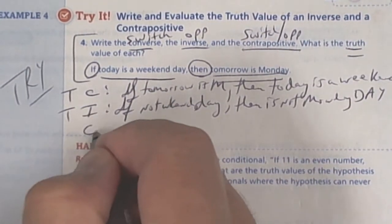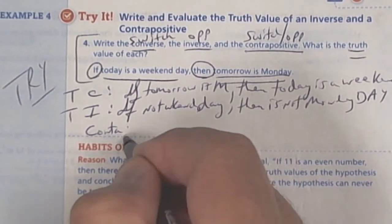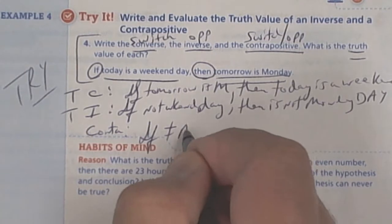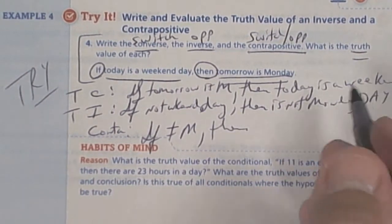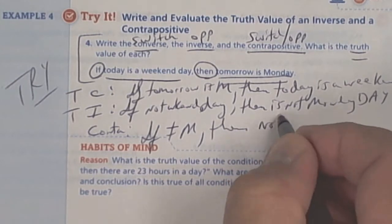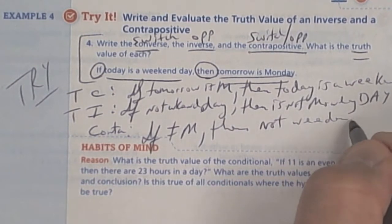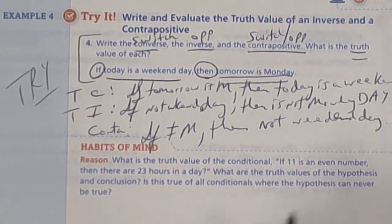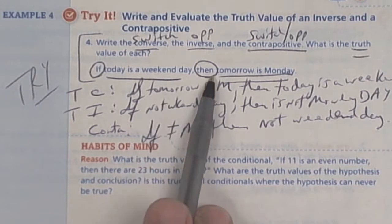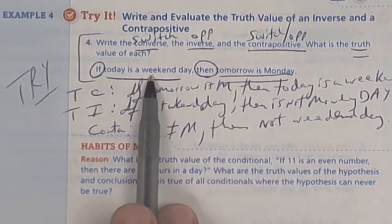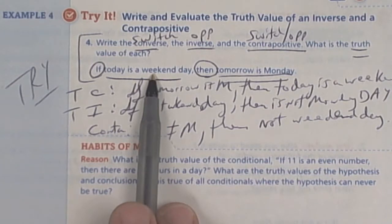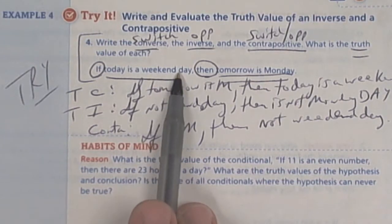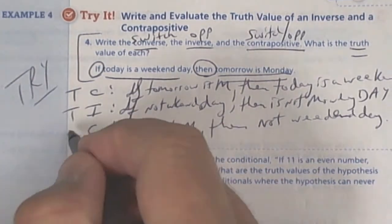And then the contrapositive would be switch and opposite. So if tomorrow is not Monday. So if not Monday, then today is not a weekend day. A weekend day. Now you got to write them out, but let's take a look at that. So if today is not Monday, then today is not a weekend day. If tomorrow is not Monday, then today is not a weekend day. I'm going to say true on that.